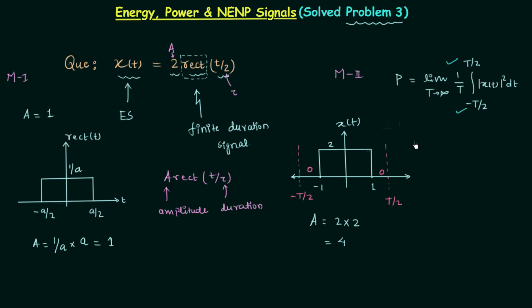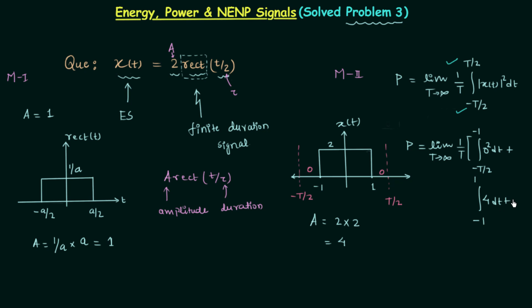Now we perform the integration: P = limit T→∞ of (1/T) times the integral. From -T/2 to -1 the signal value is 0, so 0² dt. From -1 to 1 the signal value is 2 and |2|² = 4, so we integrate 4 dt. From 1 to T/2 the signal value is again 0, so 0 dt.